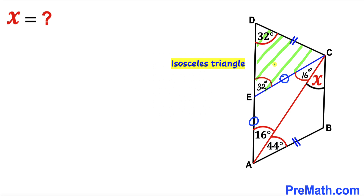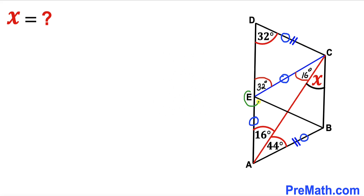Focusing on triangle DEC, this is an isosceles triangle since this angle is 32 degrees and this angle is 32 degrees. Therefore this side length equals this side length. Since these two side lengths are congruent, I can mark this one as congruent as well. Next, I connect point E to vertex B.